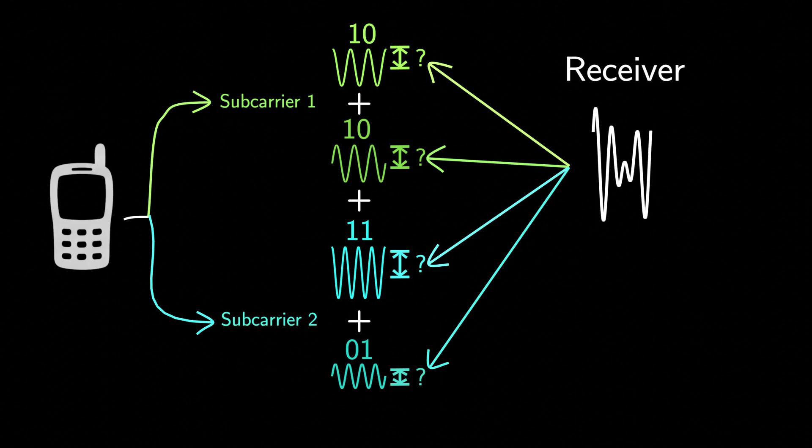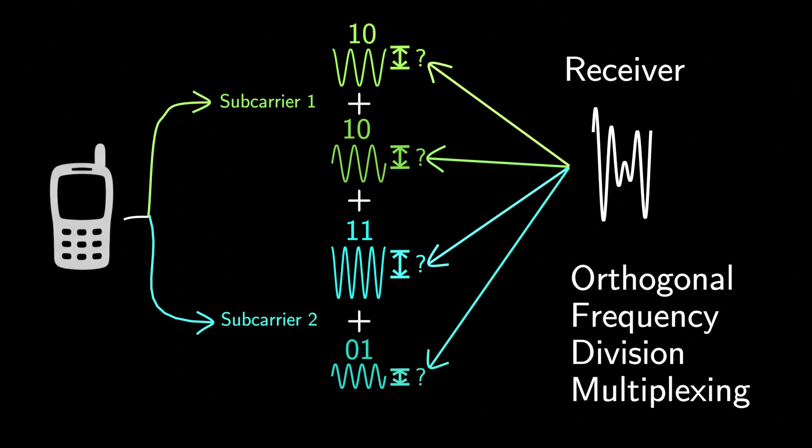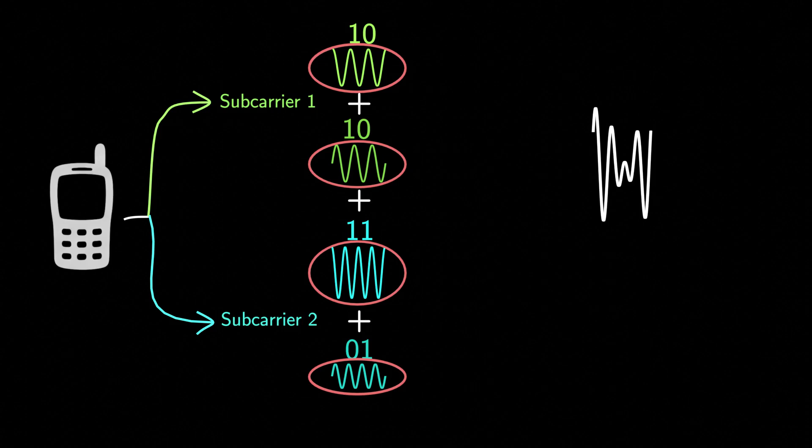The answer lies in a beautiful mathematical property. The waves we chose are orthogonal to each other. It's why OFDM is called orthogonal frequency division multiplexing. Orthogonality basically means that these waves are designed to not interfere with each other. Let me illustrate this concept using an example.